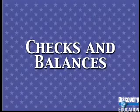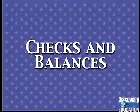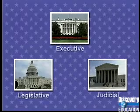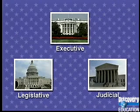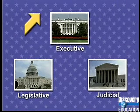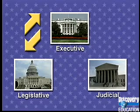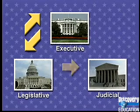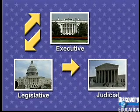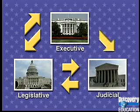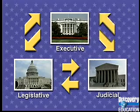Next is a system of checks and balances. This means that each branch of the government has some authority over the other branches. It limits the powers of each branch and assures that each one has to work with the other. That way, no one branch can become too powerful.